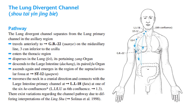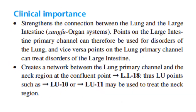There exist variations regarding the channel pathway due to differing interpretations of the Ling Shu. Clinical importance: it strengthens the connection between the lung and the large intestine as paired organ systems. Points on the large intestine primary channel can therefore be used for disorders of the lung, and vice versa. It creates a network between the lung primary channel and the neck region at the confluent point LI18; thus lung points such as Lung 10 or Lung 11 may be used to treat the neck region.